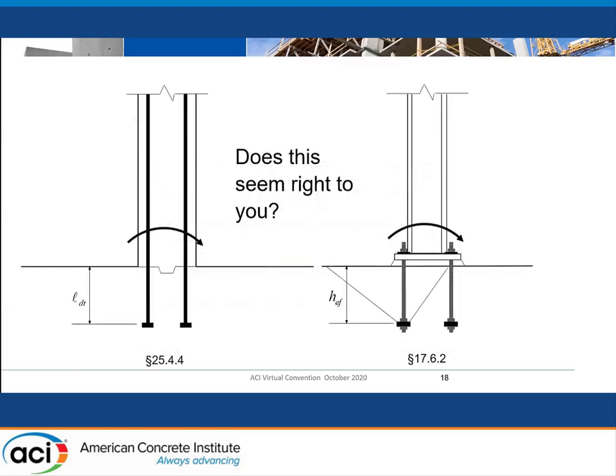As Jack pointed out, a lot of his work arose from this fundamental question: if I have a cast-in-place column and drop my bars down into the foundation and they're headed bars, I calculate L_DT and I'm done. If I run anchor bolts on a steel column down into the same foundation, I'm in that whole world of concrete breakout in 1706 — a very different safety concept and a lot more complexity and, frankly, a lot more frustration for the steel people. Of course they've accused us of doing this because we're concrete people, and nothing could be further from the truth from where I sit — but that's the way it appears.